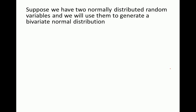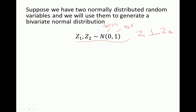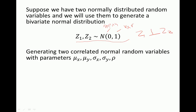Suppose we have two normally distributed random variables, Z1 and Z2, and we'll use them to generate a bivariate normal distribution. Z1 and Z2 are both normally distributed with mean 0 and variance 1, and Z1 and Z2 are independent — so they're not correlated. But we can use them to generate two correlated normal random variables with parameters mu_x, mu_y, sigma_x, sigma_y, and rho — the correlation coefficient.